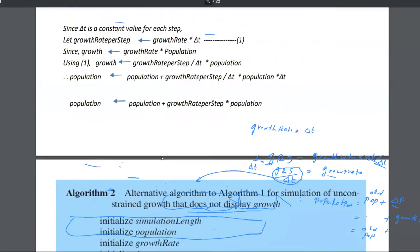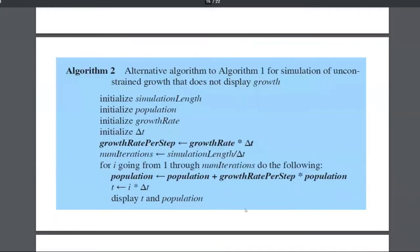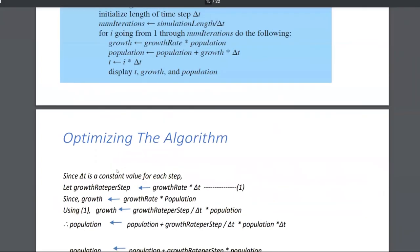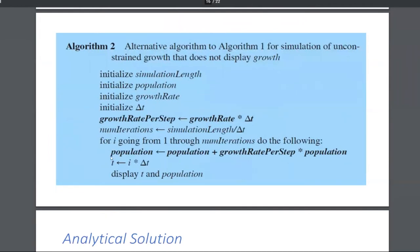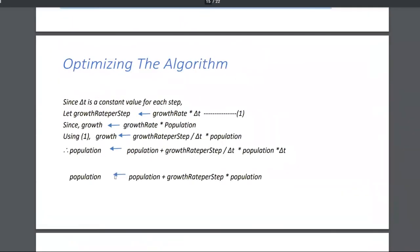So what you come up with is: population equals population plus growth rate per step multiplied by population. So instead of having two lines — calculating growth and then applying growth — in this program I have one line. That's how I reduce the number of equations. If you don't understand it, don't worry about it, but if you can follow, you're good to go.